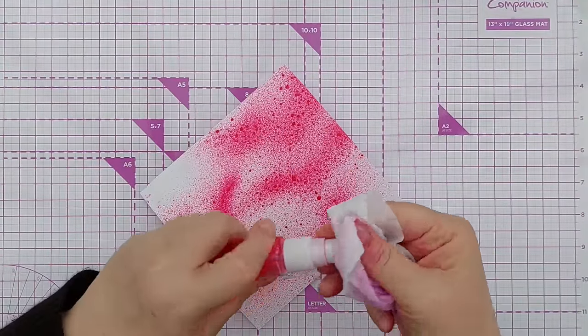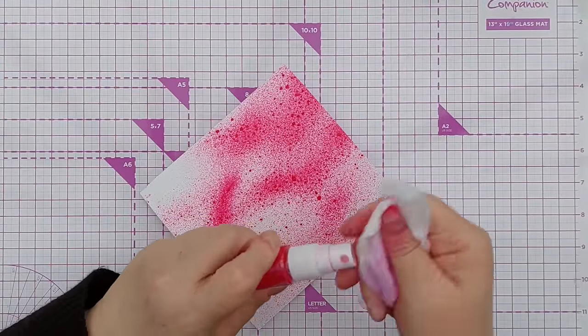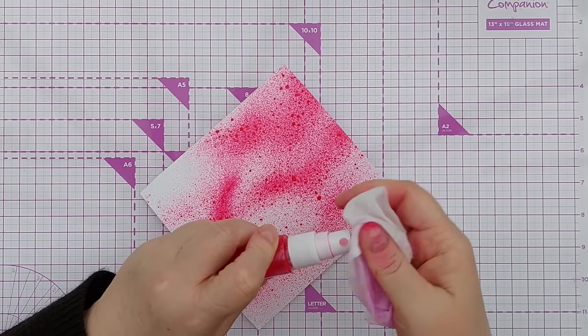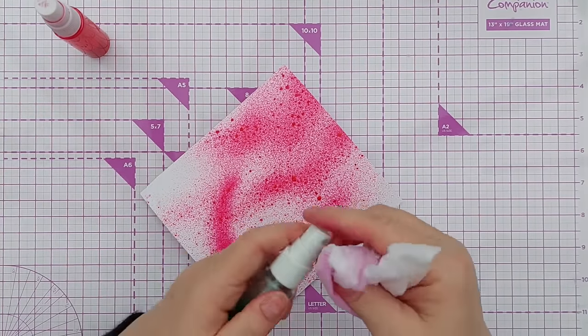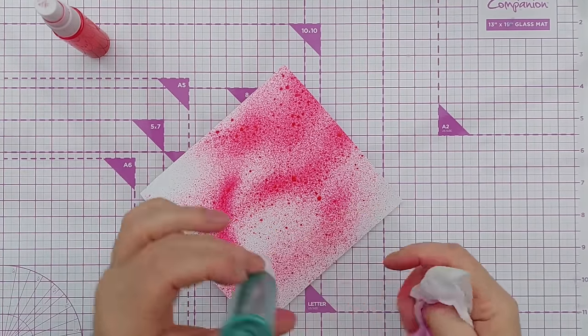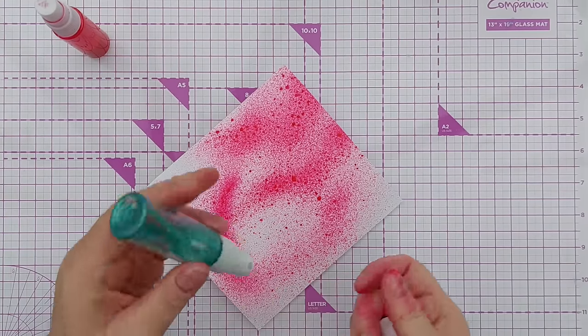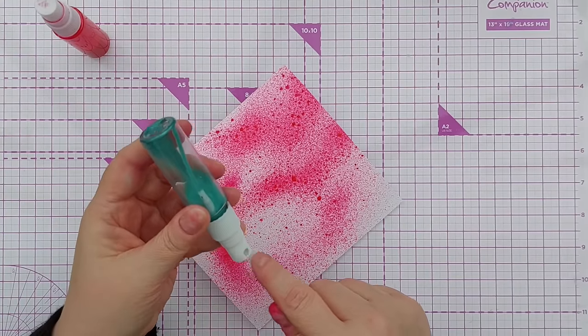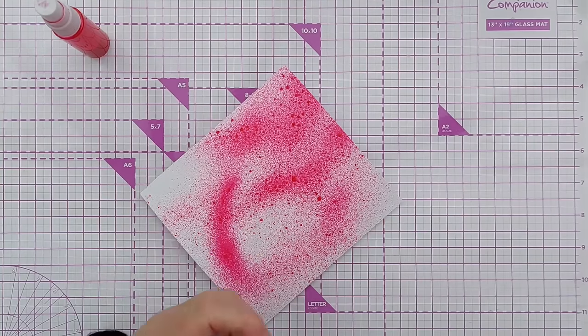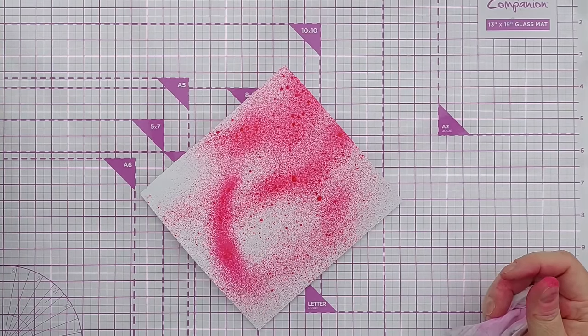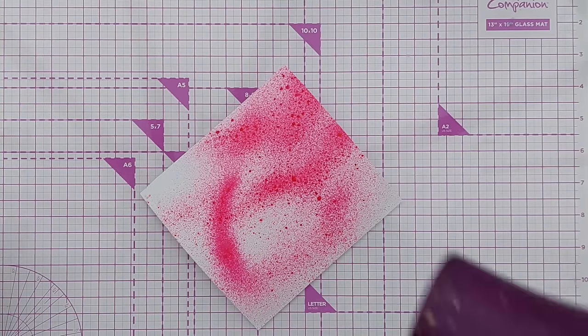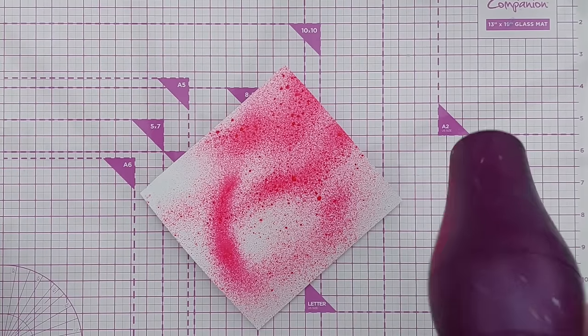To prevent clogging, I recommend giving the nozzle a good wipe over after every use. You can also hold them upside down and spritz them a couple of times to clear the nozzle of any spray. I'm just going to dry this and we'll see what it looks like.